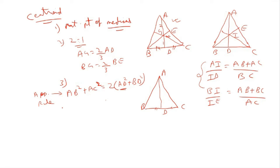Another key property: when all three medians are drawn in a triangle, they divide the entire triangle into six equal smaller triangles. If you count them — one, two, three, four, five, six — those six parts are equal in area. This is especially useful for area-related questions: calculate the area of one of these smaller triangles and multiply by six to get the total area.